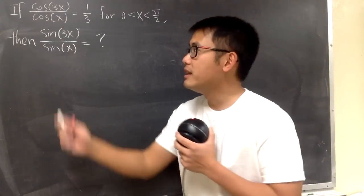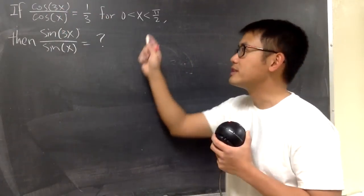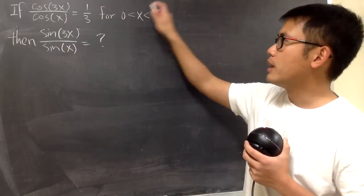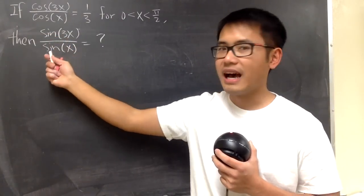Okay, that's SusanMath4Fund here with this question. It says, if cos(3x) over cos(x) is equal to 1/3, for x between 0 and π/2, then we're going to find out the value for sin(3x) over sin(x).